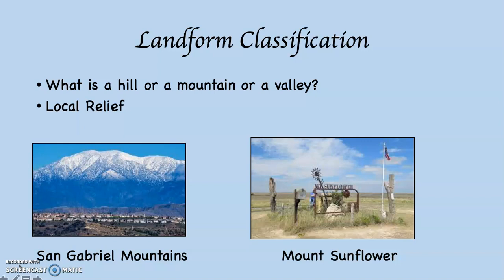Here's what's going on. First of all, as in the first of these two terms, is local relief. Local relief is the vertical distance between the highest and lowest points in a given area. Mount Baldy in the San Gabriel Mountains is 10,064 feet high. Santa Ana College is about 60 feet above sea level. That means the local relief between Santa Ana College and Mount Baldy is 10,004 feet.